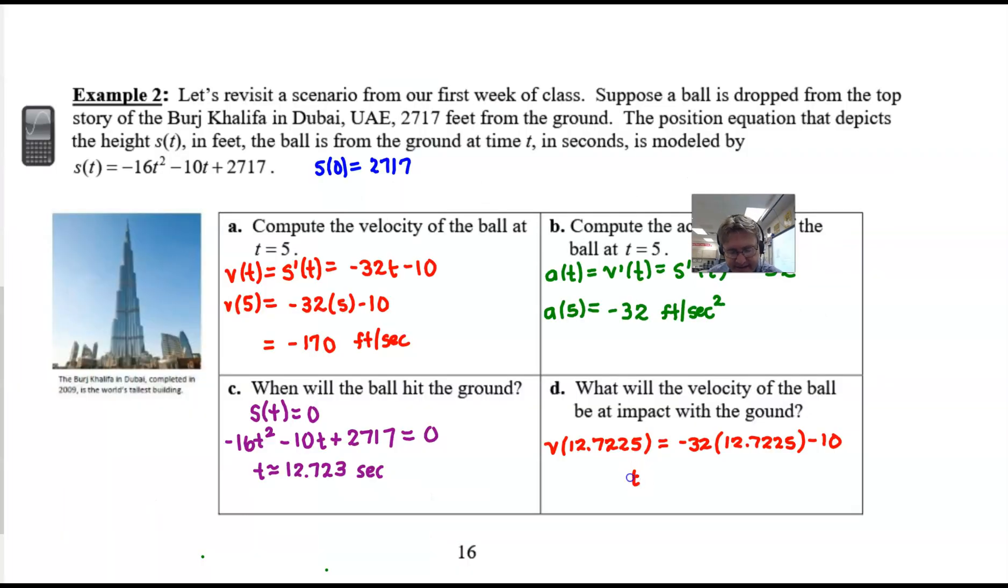We'll return to our notes and write that down. Velocity at time 12.7225 is approximately -417.12. It is a velocity measurement, so that would be in feet per second.